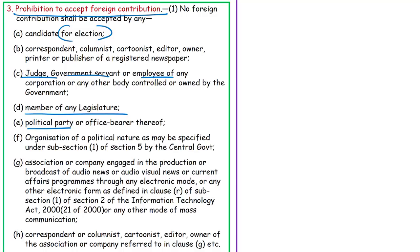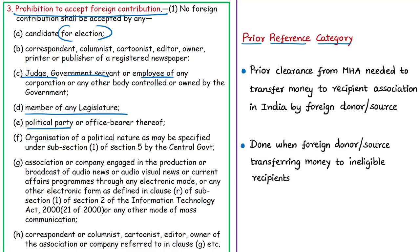Condition 2 mandates that individuals, associations, or companies wanting to receive foreign contribution must obtain FCRA registration or FCRA prior permission from the central government. If they are not registered under FCRA or do not have FCRA prior permission, they are ineligible to receive foreign contribution.